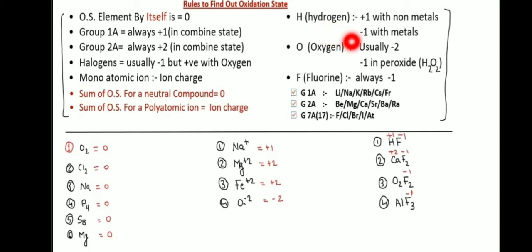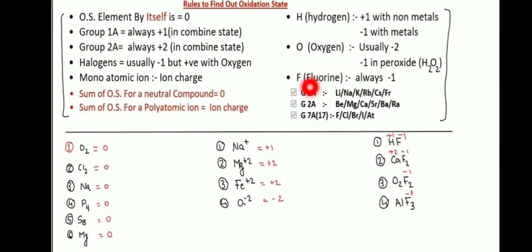Oxygen oxidation state: minus two usually. But in peroxide, oxidation state is minus one. Fluorine oxidation state is always minus one.